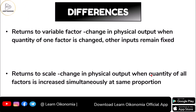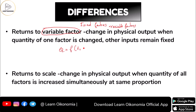In the case of returns to variable factor, as we can see here, this shows the returns to what is called the variable factor. In the process of production we use certain fixed factors as well as variable factors. We are looking at the case where output is a function of two factors — labor and capital. In this case, let's consider labor as the variable factor.